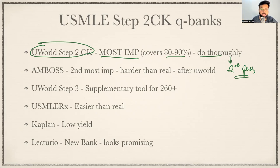And if you are really aiming for a high score, which everybody is aiming now, second pass of UWorld is also very important. One pass is definitely needed, second pass if you are aiming for a very high score. Now after you are done with all the UWorld, if you ask me, your next step in studying is AMBOSS. AMBOSS is the second most important Q-bank.